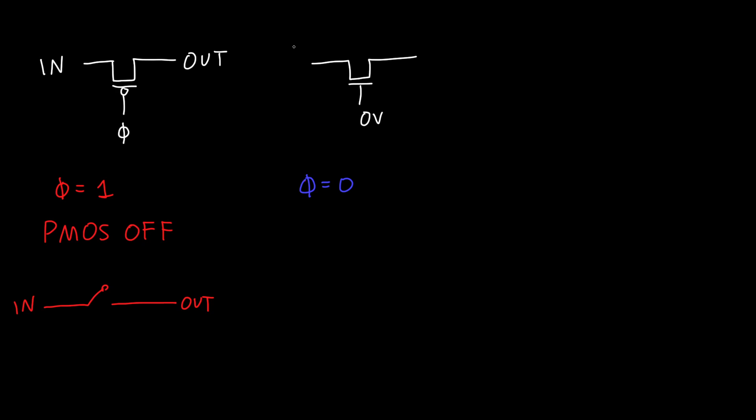If our input is equal to VDD, then we don't have any problems. Our output is equal to VDD. But now if our input is equal to zero volts, then our output turns out can be at most the threshold voltage.